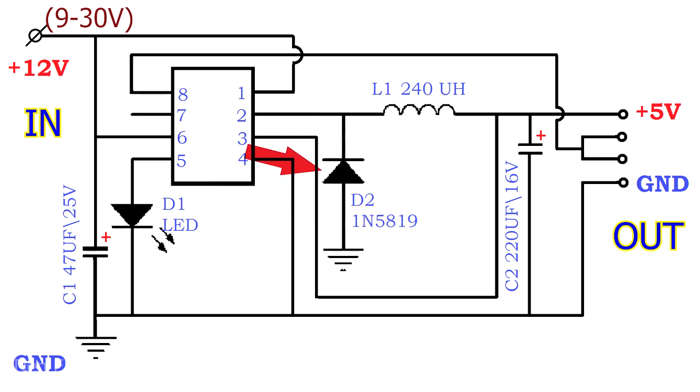D2 is a low dropout silicon Schottky diode. Instead, any other Schottky diode will do, and conventional rectifier or pulse diodes cannot be used here.